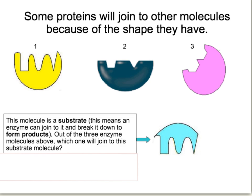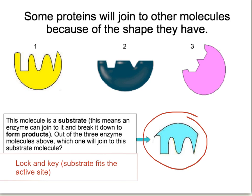Enzymes are represented as a blobby shape with a specific area that has a specialised shape to it. Looking at the substrate molecule, scientists describe enzymes fitting with their substrates as a lock and key — the substrate is the key, and it will fit into one specific enzyme. You can see from the diagram it fits into enzyme number one and won't fit either of the other two. This is why enzymes are very specific to a particular reaction — a protease won't break down a carbohydrate molecule, and a lipase won't break down a protein.